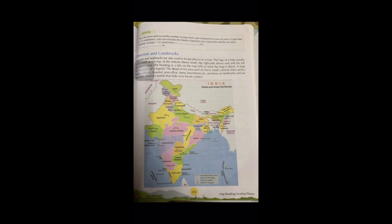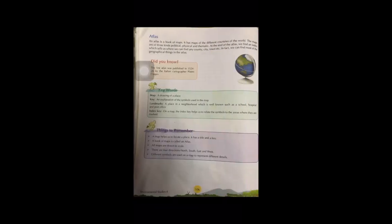What are the directions and landmarks used in a map? What symbols are used? And also, what is an atlas? These things we will be discussing briefly in this chapter.